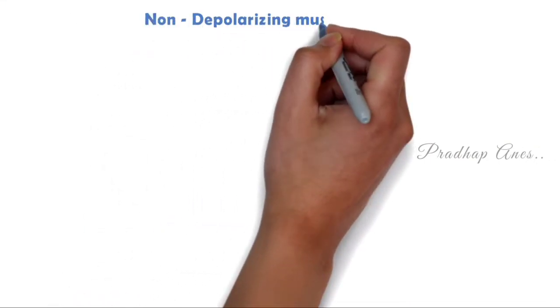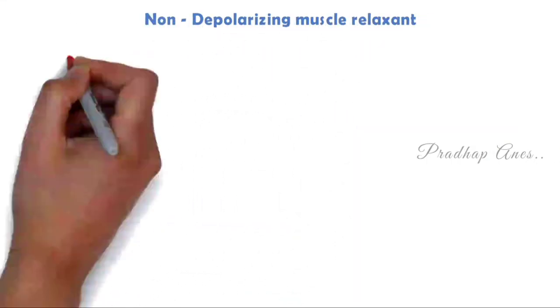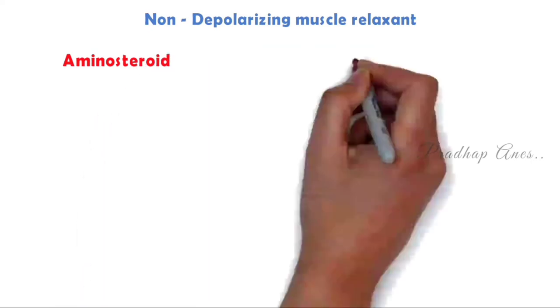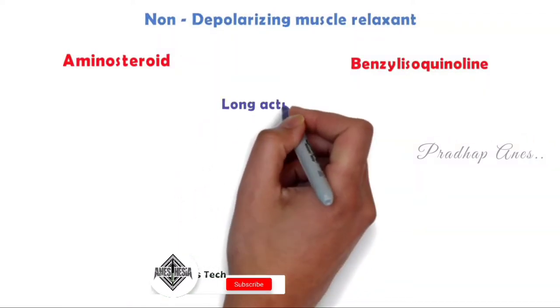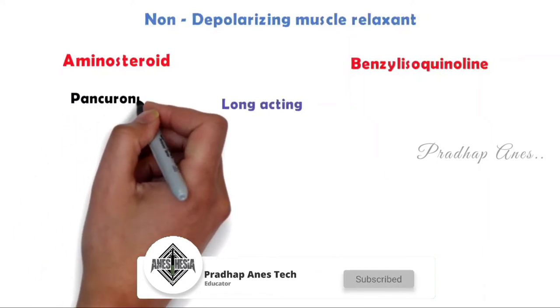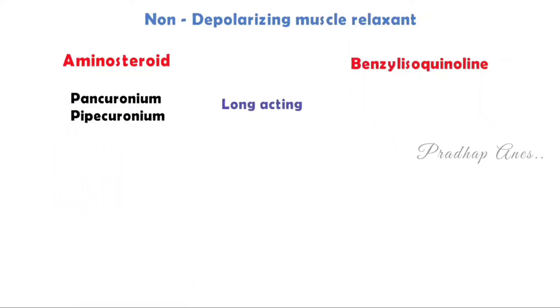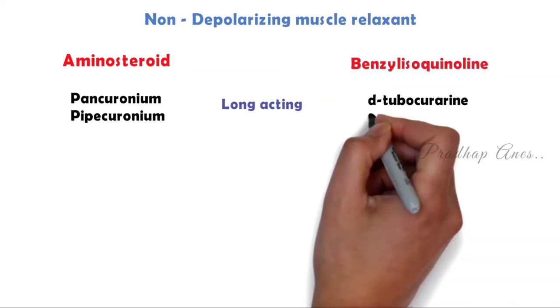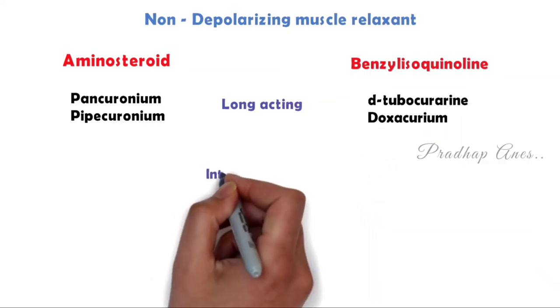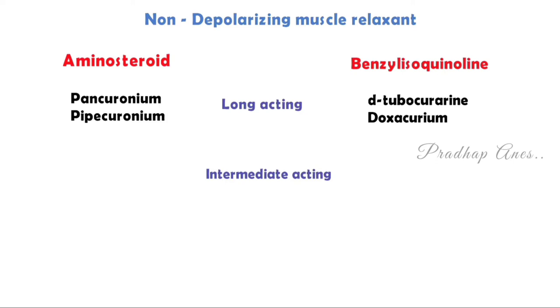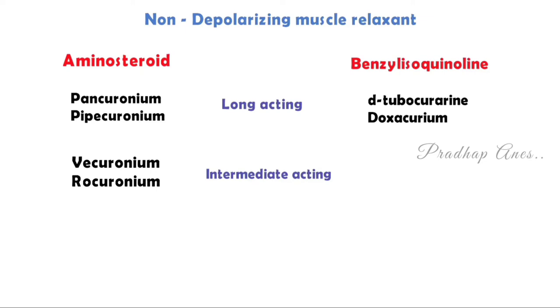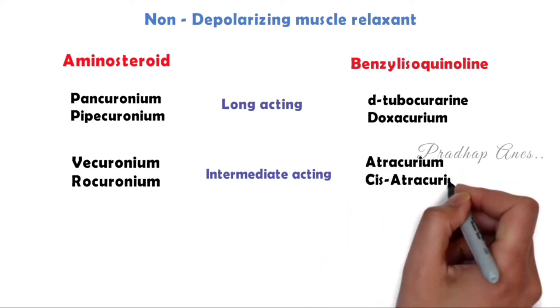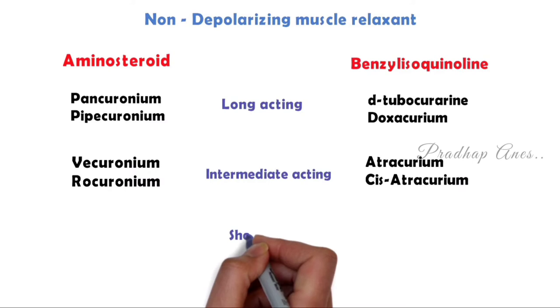According to the chemical structure, non-depolarizing muscle relaxants are further classified into aminosteroid and benzylisoquinoline. According to the duration, it is classified into long-acting, intermediate acting, and short acting.